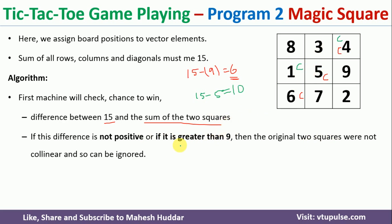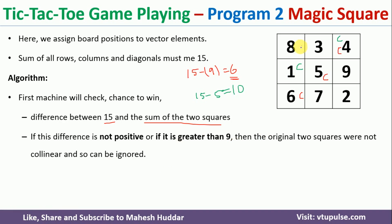Let us take one more possibility. Assume the computer has played at positions 8 and 9. Then 8 plus 9 is 17, and 15 minus 17 equals minus 2. Since minus 2 is not positive, the computer is not winning here either. Because it is not winning, it will check whether the other player is winning.